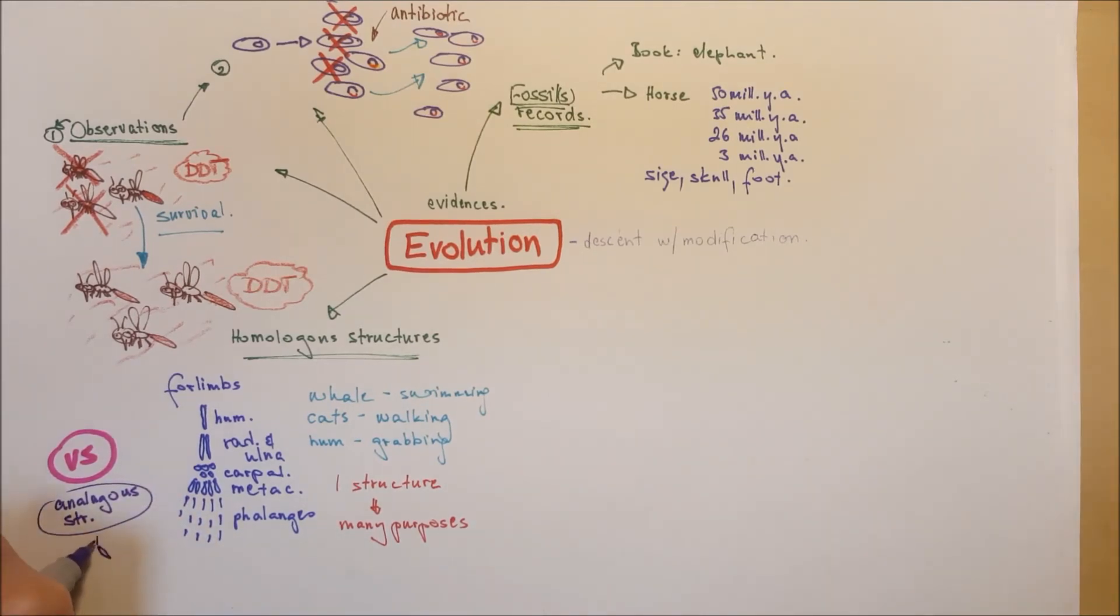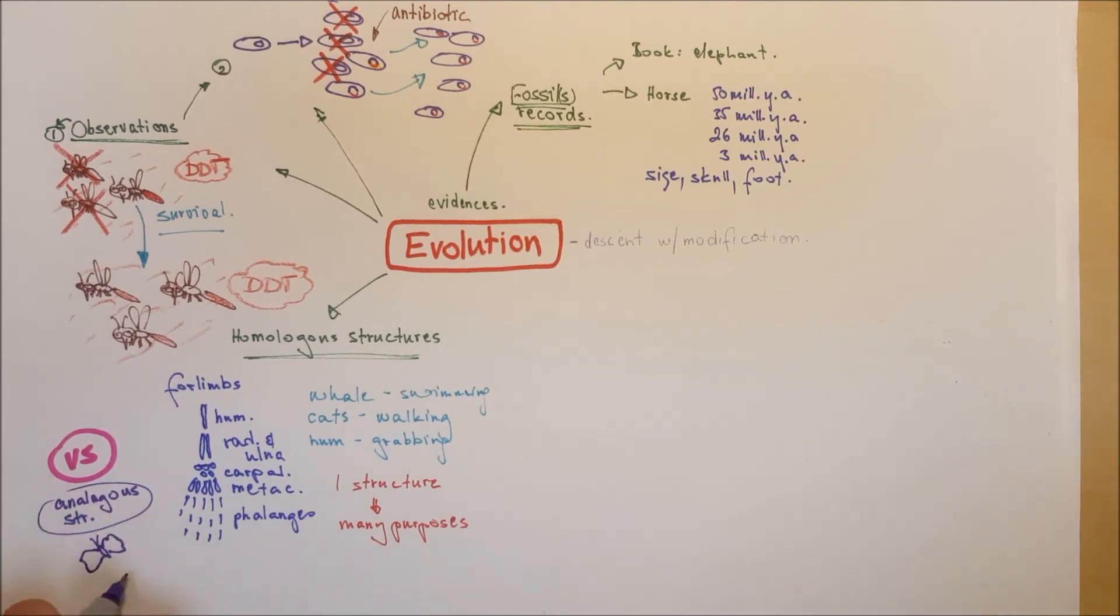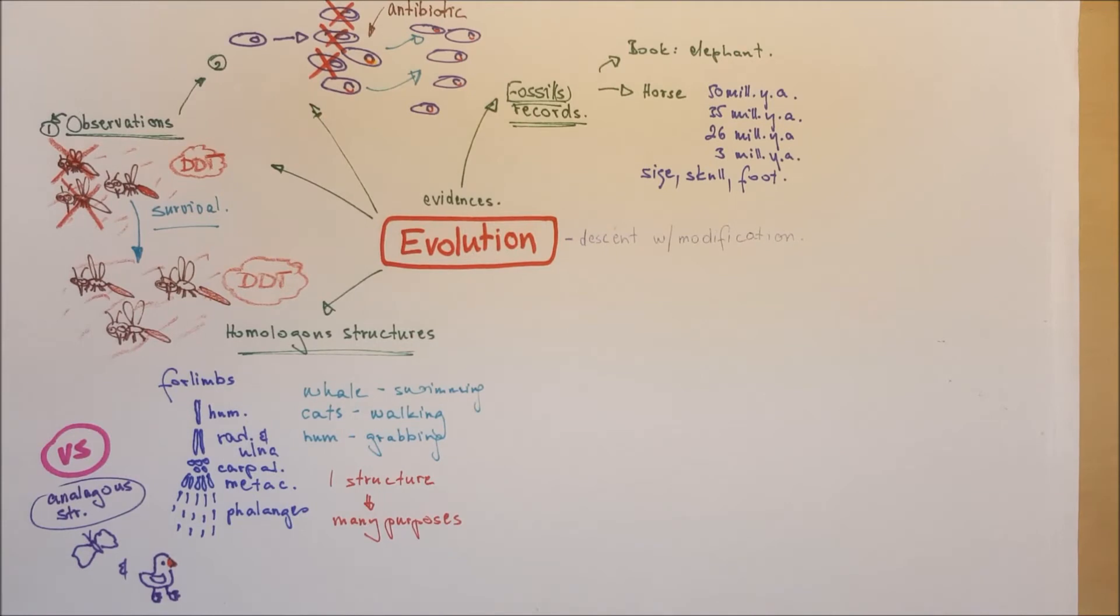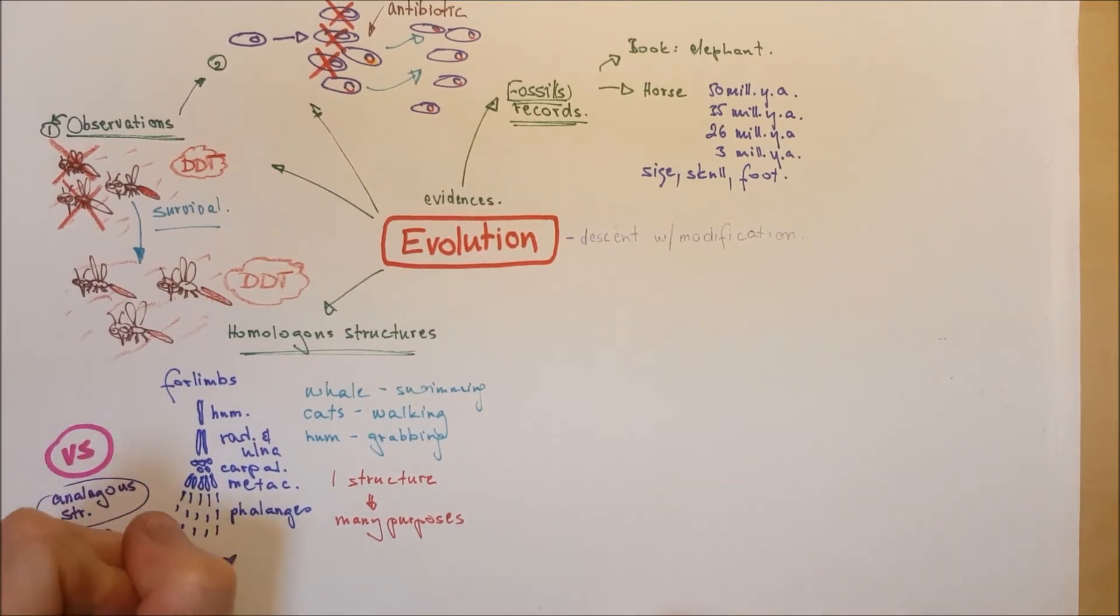That means similar, for example, the butterfly's wings versus the duck's wings. Both of them are wings, but they are similar structures. But the species relate to each other very distantly.